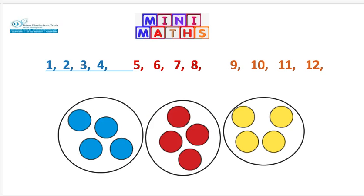Here is one example. Here are three groups of four. One group, two groups, three groups, and each group has one, two, three, four things in them.